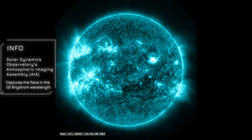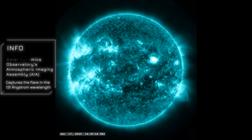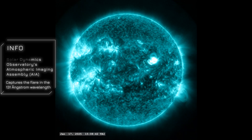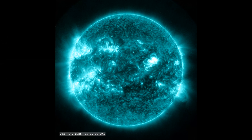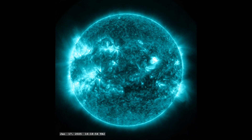In this sequence, the Solar Dynamics Observatory's Atmospheric Imaging Assembly (AIA) captures the flare in the 131 angstrom wavelength, highlighting extremely hot plasma — millions of degrees Kelvin — associated with solar flares. This filter reveals the initial burst of energy, showcasing the flare's intensity and the rapid release of magnetic energy. Such events can emit X-rays capable of disrupting Earth's ionosphere, potentially affecting radio communications and GPS signals, and understanding these emissions aids in mitigating technological impacts on our planet.